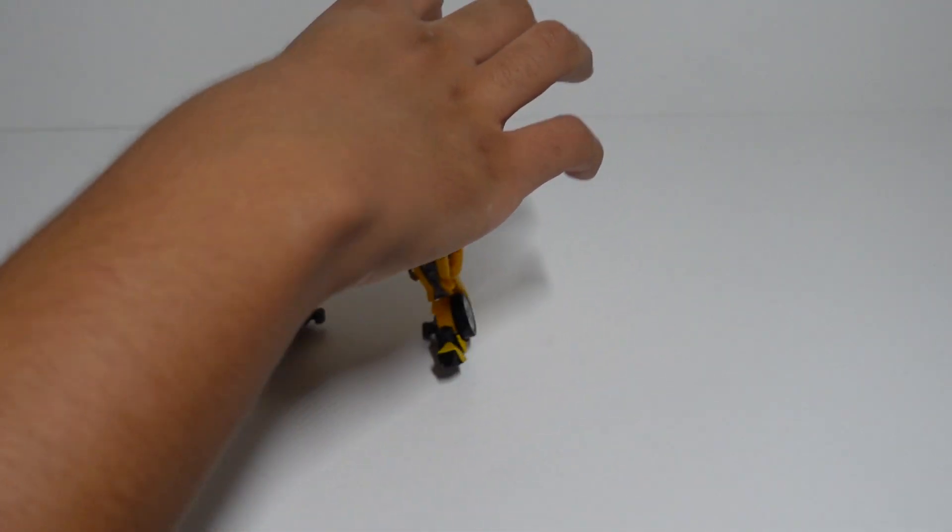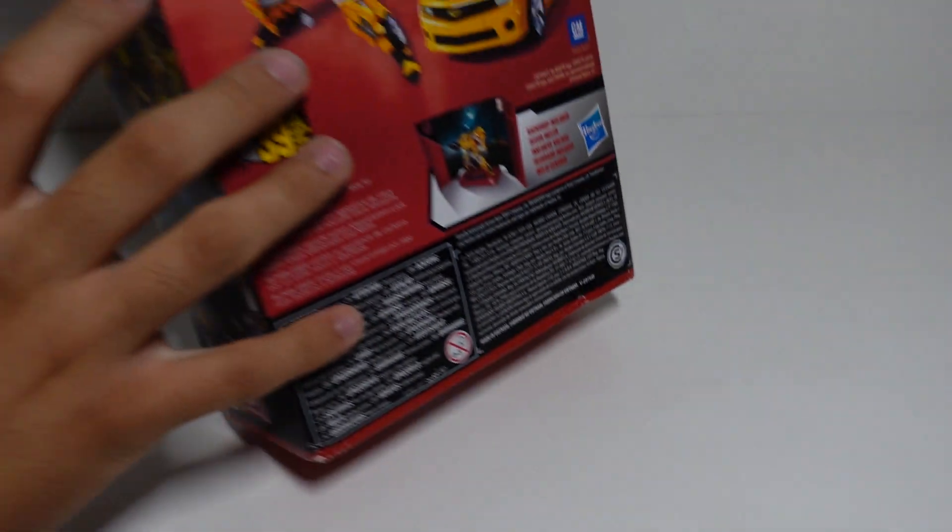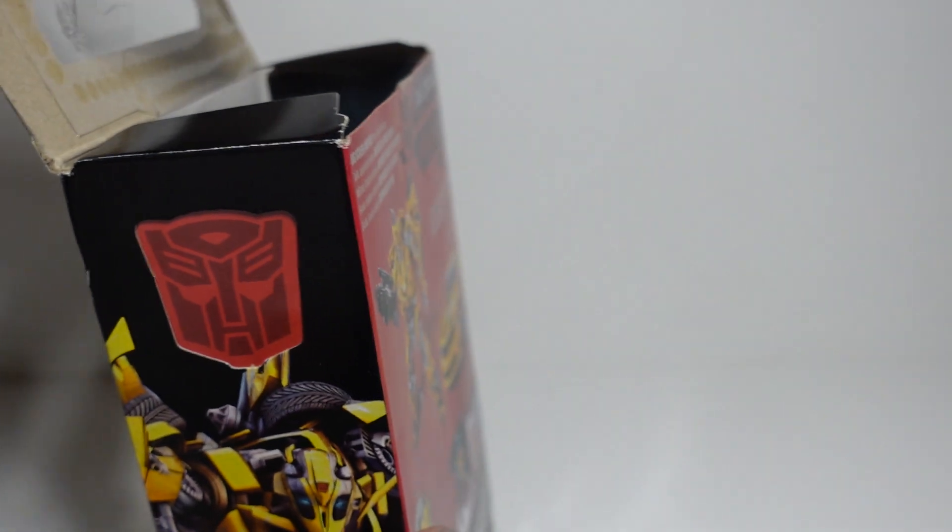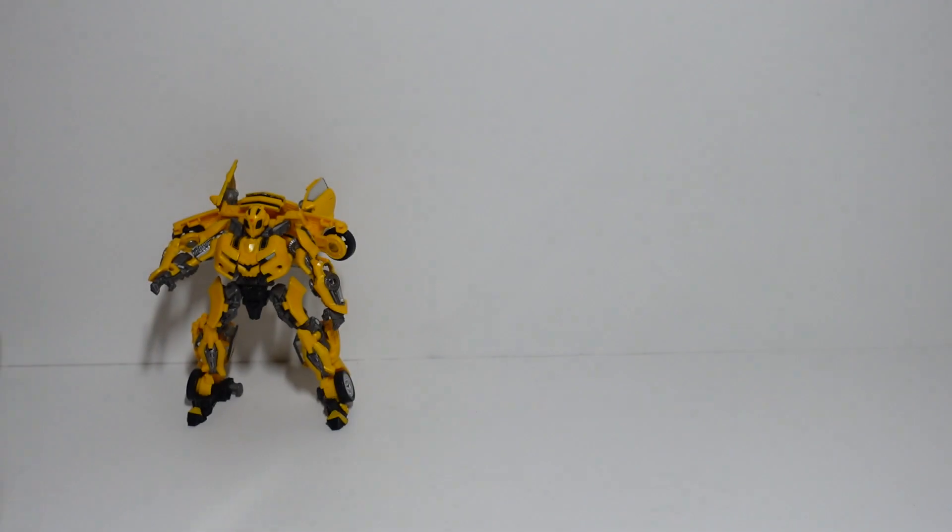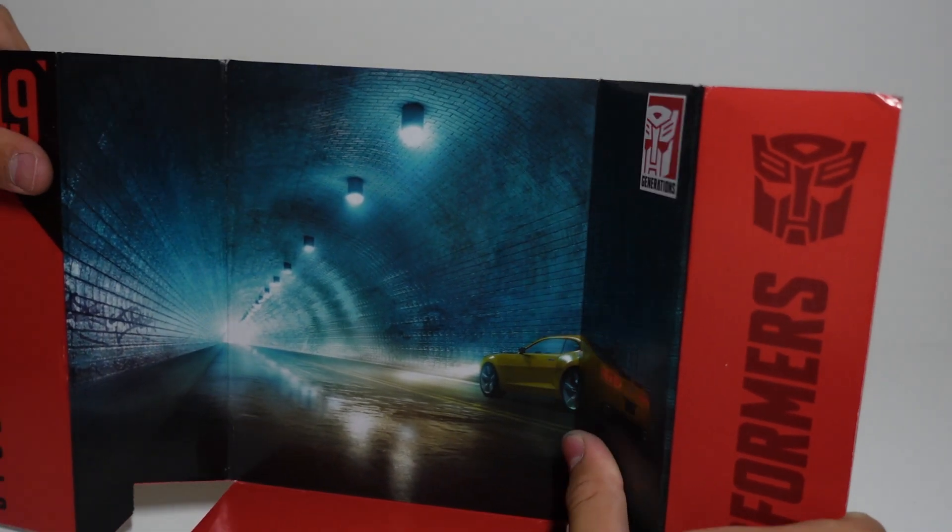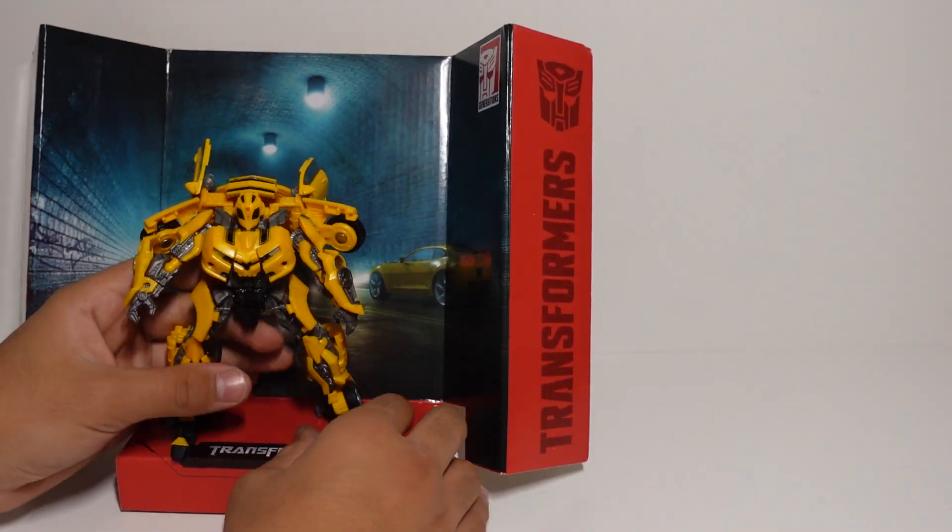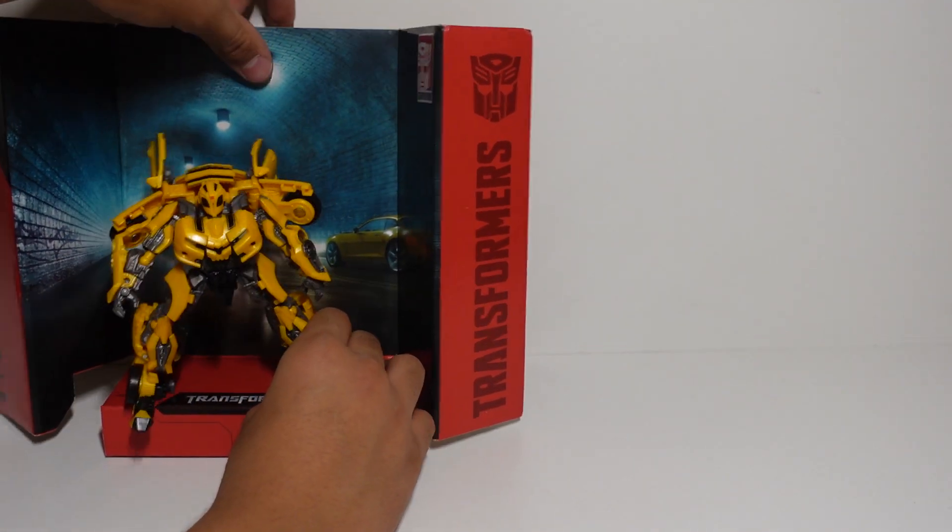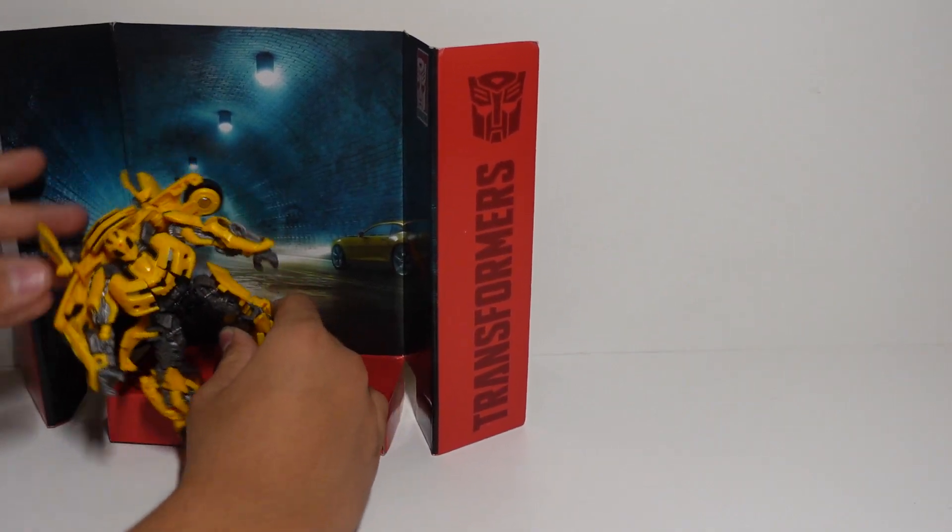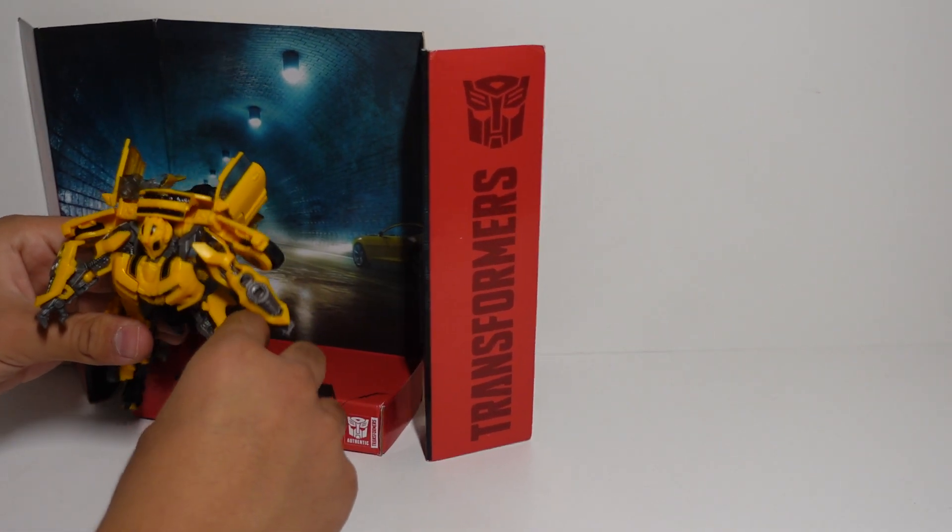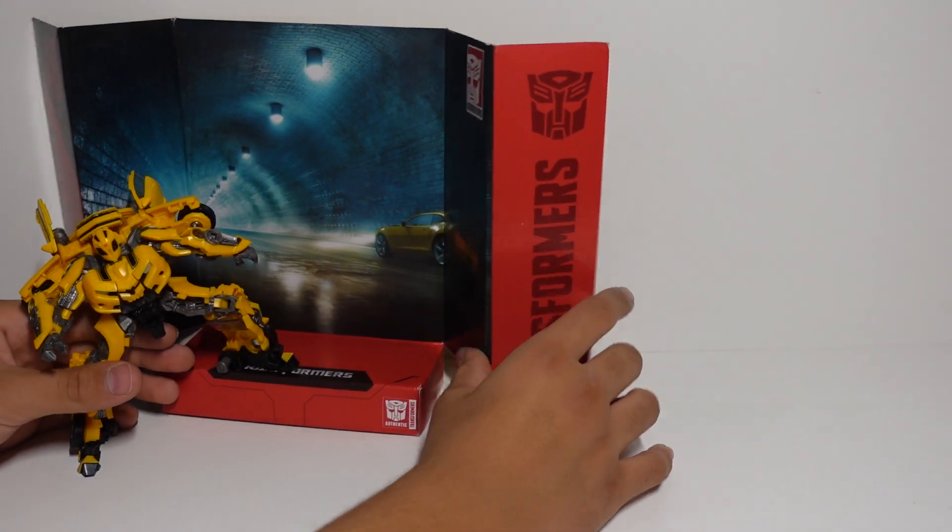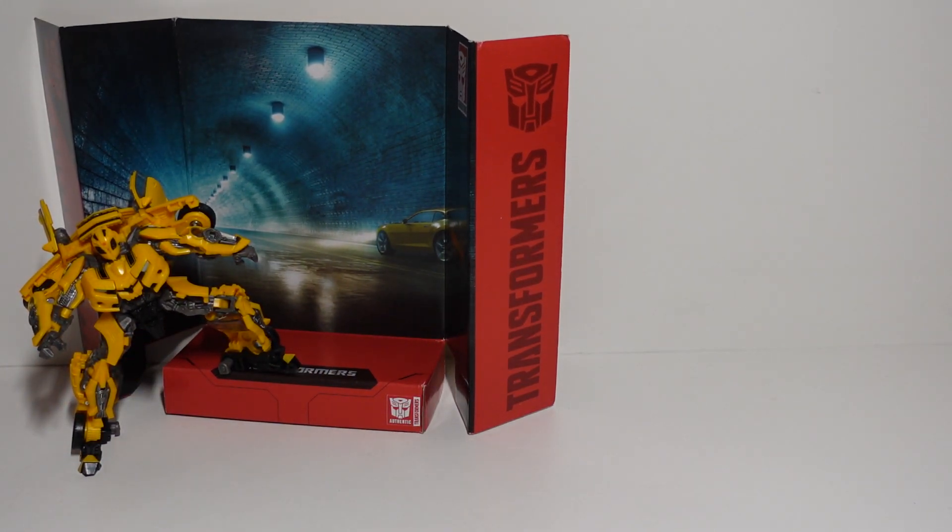And if you want to showcase Bumblebee in his backdrop, what you simply gotta do is take it out. Take out his backdrop, put his box to the side for now. And then you have Bumblebee in his backdrop. Pretty cool, right?